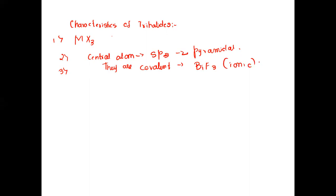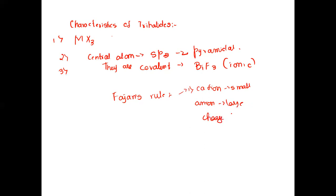Why is BiF3 ionic? According to Fajan's rules, the ionic-covalent character depends on: the size of the cation being small, the size of the anion being large, and the charge being high. In BiF3, bismuth is at the bottom of the nitrogen family so its cation size is the largest, while fluoride is the smallest anion. This gives ionic character rather than covalent.